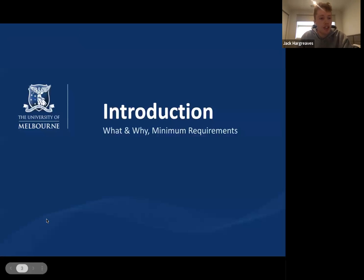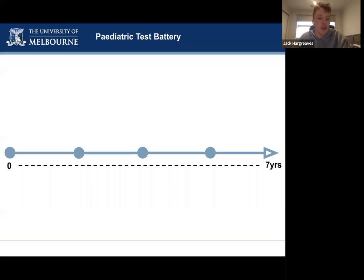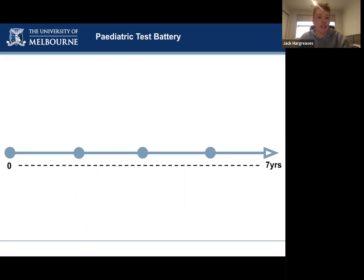In this introduction section, the goal is to provide context for where play audiometry fits within our pediatric test battery and discuss why it is such an important test. A really big part of the pediatric test space is picking a test that matches the developmental ability of the child in front of you. We have a spectrum of tests to establish hearing status from birth right up to about seven years old, where we expect children can then be tested under the adult test battery.